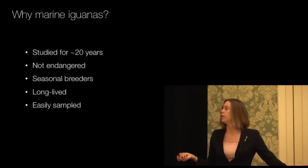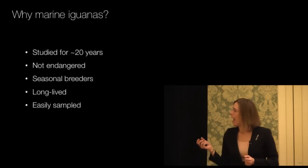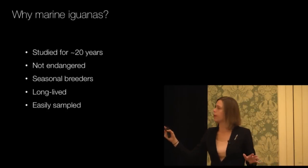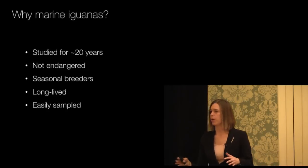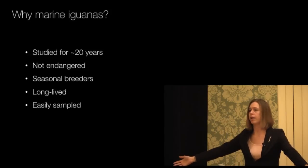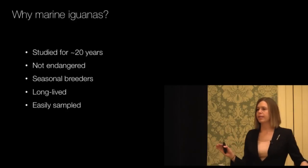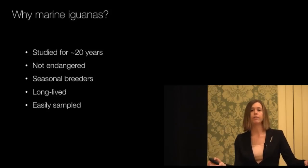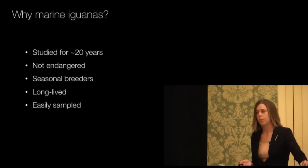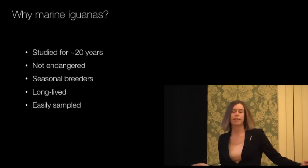These animals are seasonal breeders, so we can find them reliably at certain times of the year in reproductive mode and a non-reproductive mode. Because of their breeding ecology, we can actually collect large numbers of animals at the same time. These animals congregate in large breeding groups called leks, where the males defend territories and then females come in and the males will mate with them. We can basically sample — in a small area there are hundreds of animals that we can just walk up to and sample. They're also long-lived, so we can track these individuals at their site because they're territorial throughout their lifetime.